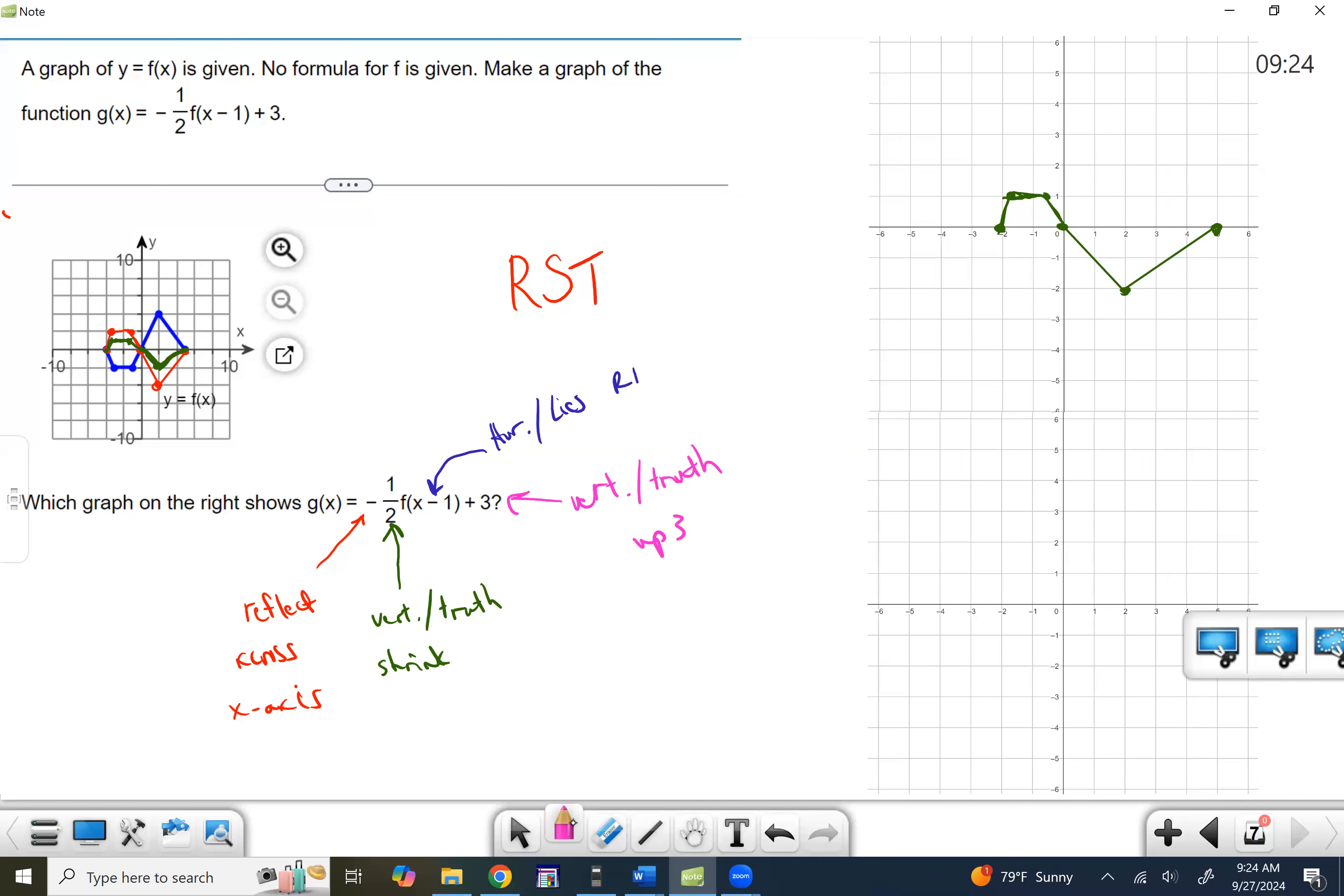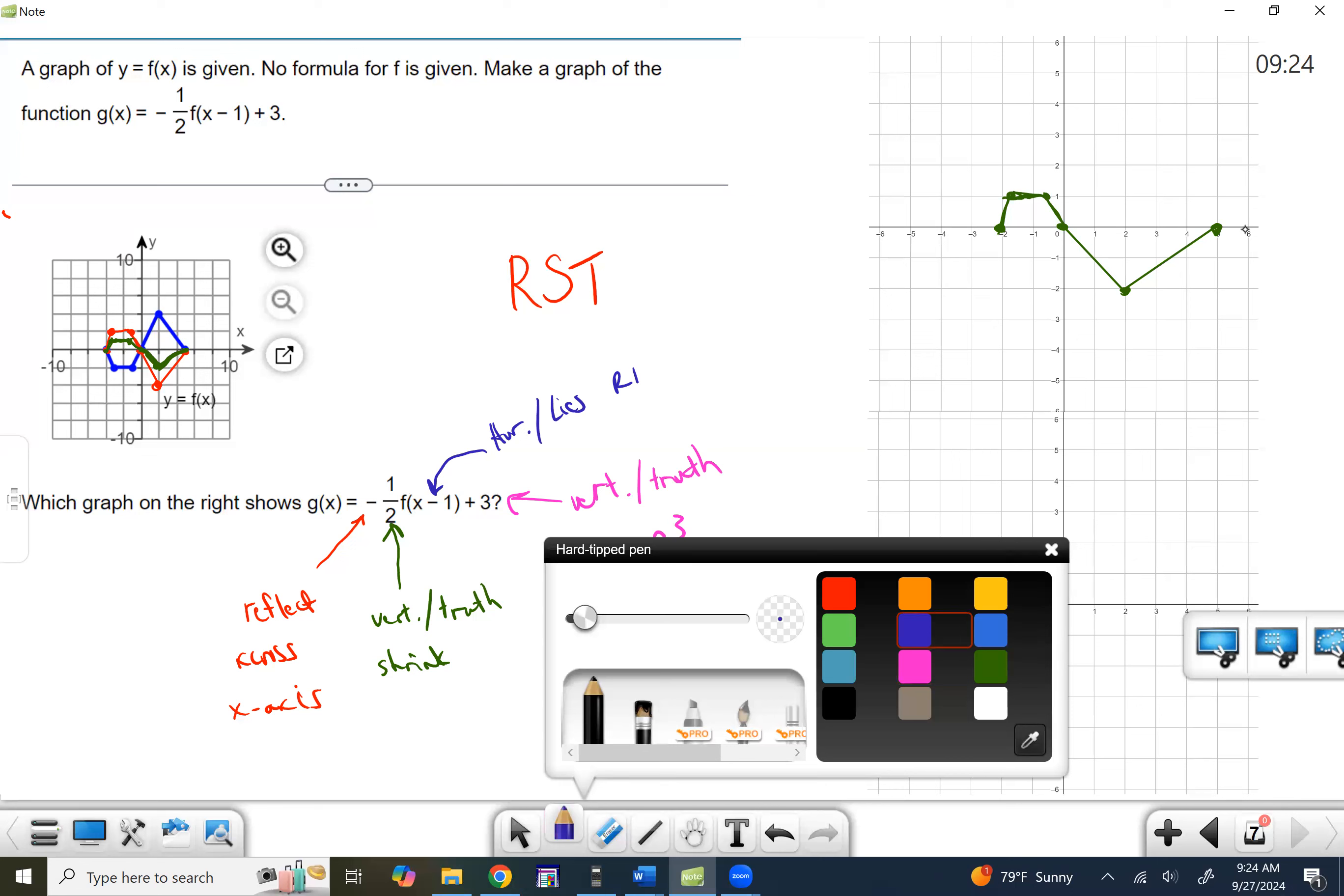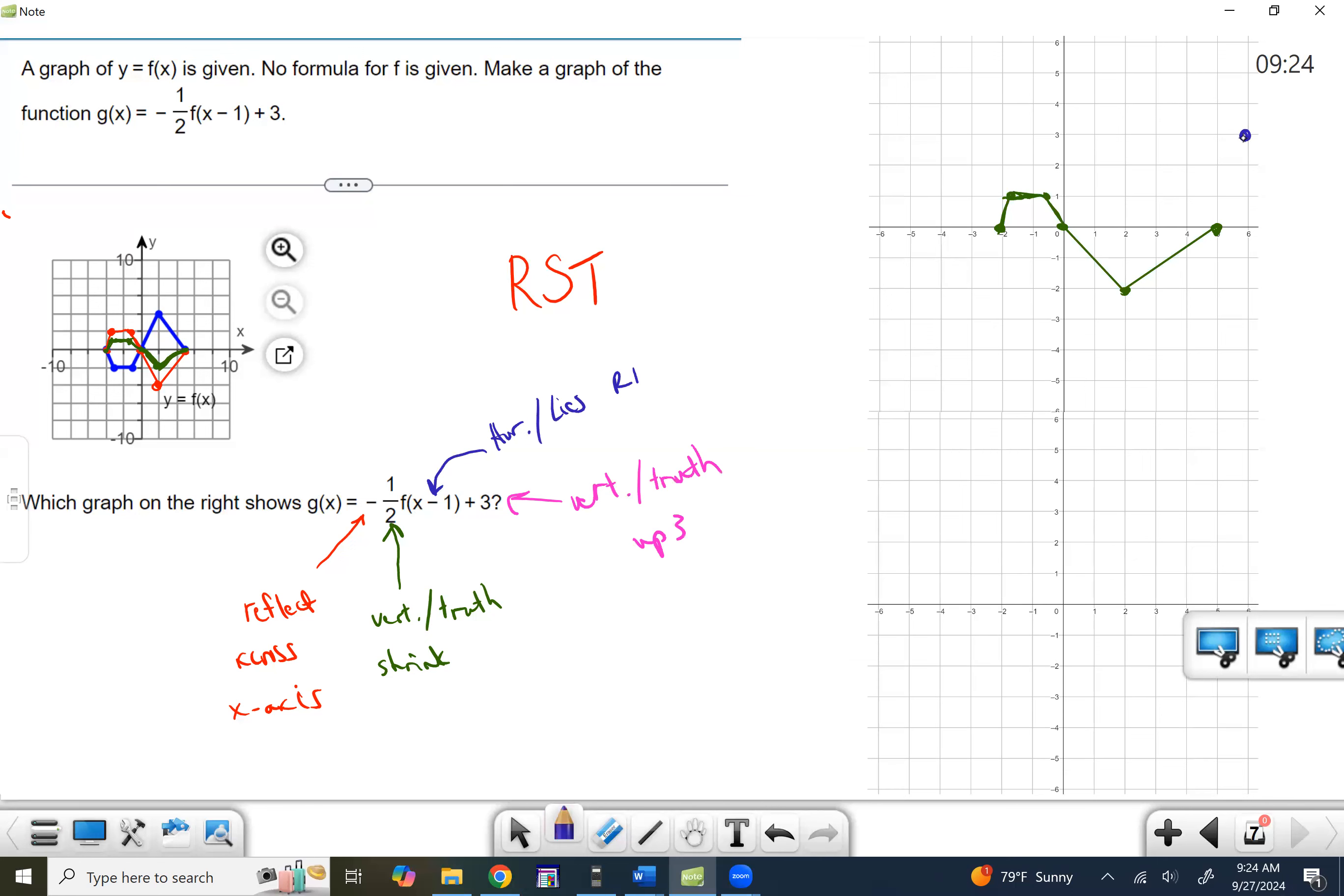So we're going to go right one up three with each one of these dots. So right one up three, right one up three, right one up three—at least we have our triangle part. And then right one up three, right one up three, and right one up.